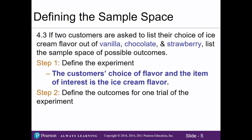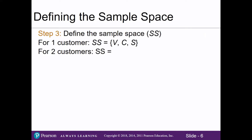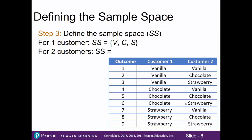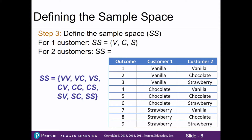The possible outcomes for one trial or one customer are our three flavors: V for vanilla, C for chocolate, and S for strawberry. Since we're interested in the sample space for two customers we expand our outcomes. Using a table to organize them, outcome one is both customers saying vanilla, the next has the first customer saying vanilla and the second saying chocolate, and so on systematically. There are nine outcomes total, each letter representing one of the flavors for our first and second customer.